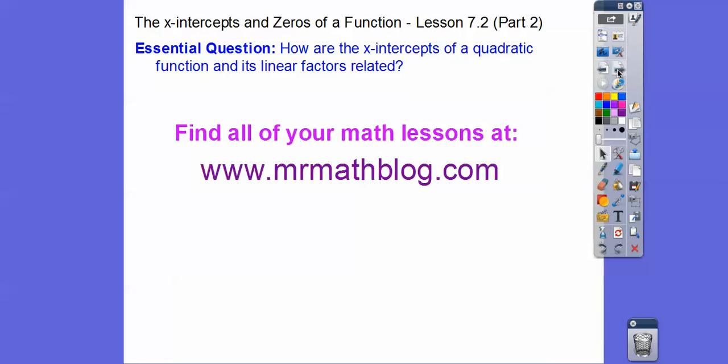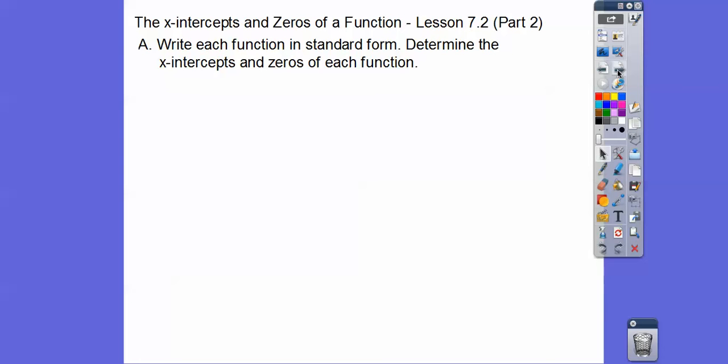So here's our question: how are the x-intercepts of a quadratic function and its linear factors related? We're going to write each function in standard form and determine the x-intercepts and zeros of each function. Remember this from last time, we just set this equal to zero. So x + 1 = 0 when x = -1, and x - 3 = 0 when x = 3. So the x-intercepts are the same as the zeros.